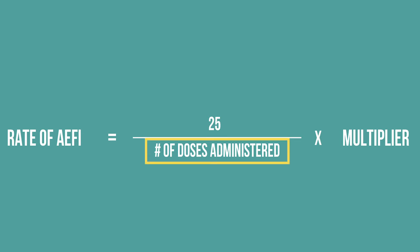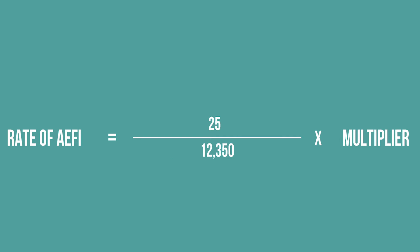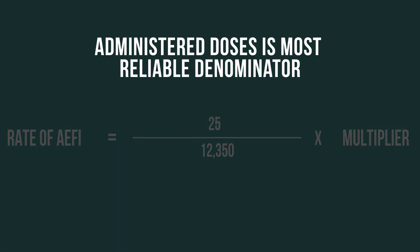Next, you need to determine the denominator. This is typically the number of doses administered for each vaccine dose during a period of time — usually a month, a quarter, or a year. For the first dose of MMR, the denominator will be the number of infants who received a first dose of MMR during the same period. In our example, there were 12,350 MMR vaccinations given in the district in the past month.